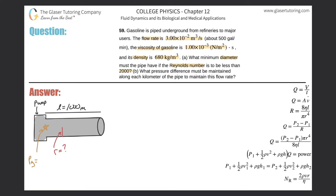Since we're dealing with Reynolds number and pipe diameter, we'll use the Reynolds number formula: Re = 2ρvr/η, where ρ is the fluid density, v is the fluid velocity, r is the pipe radius, and η is the fluid viscosity.